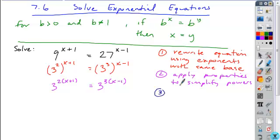And the next step would be to just equate these powers. Okay, so if you have two exponents whose bases are equal, then that means that their powers also have to be equal. So all we need to do is worry about 2 times x plus 1, set it equal to 3 times x minus 1, and then solve the resulting equation.